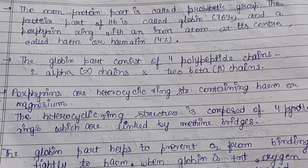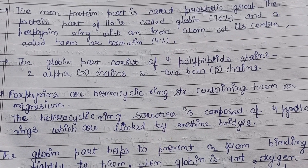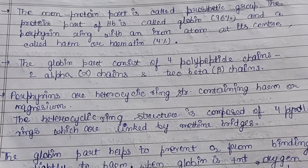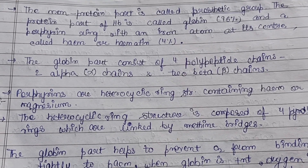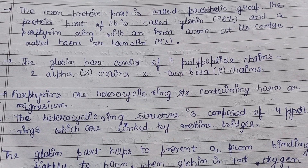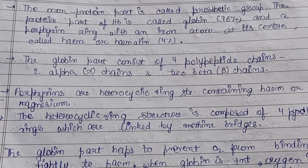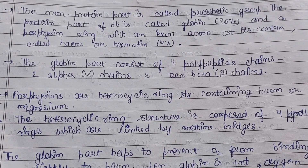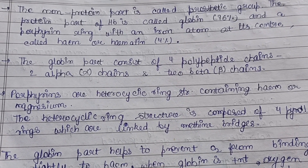The globin part — which is the 96% protein component — contains 4 polypeptide chains. These polypeptide chains form the structural backbone of the hemoglobin molecule.